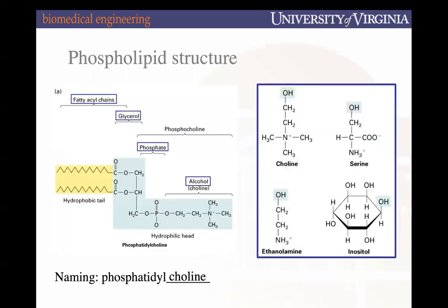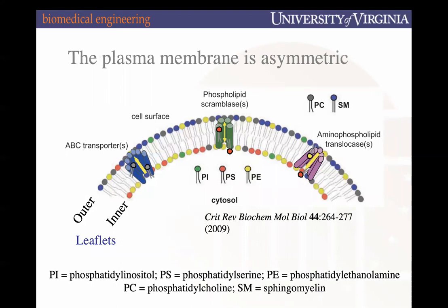Now let's apply all of this to lupus. We talked about how the fatty acid chain, glycerol, and phosphate group make up phosphatidic acid, and the alcohol defines the specificity of that phospholipid. Within our plasma membrane there are some phospholipids on the outer leaflet and some restricted to the inner leaflet. The phospholipid of interest is phosphatidylserine, which is an inner leaflet phospholipid.